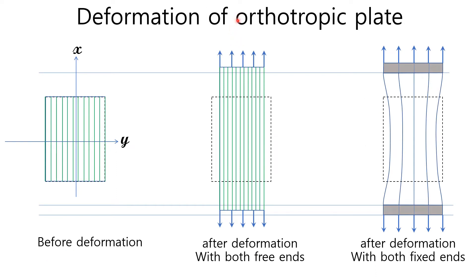Let's think about deformation of an orthotropic plate when the x and y axes correspond to the principal axes. If you extend the plate along the principal x-axis with simply supported end conditions, like the middle in this picture, the lateral deformation is the same all the way along the longitudinal x-axis. But the lateral deformation will be different along the longitudinal x-axis with clamped end conditions. Nonetheless, its shape is still mirror-symmetric about the longitudinal axis.